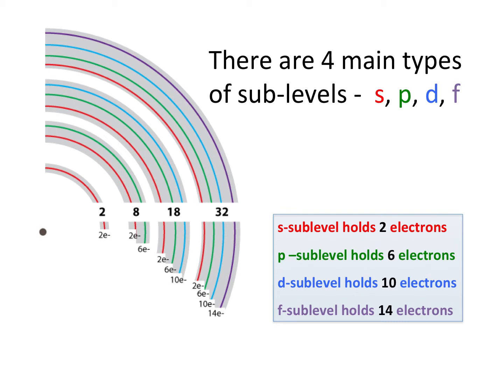That second row represents the second principal energy level. You can see it's broken into two parts: the S sublevel corresponds to lithium and beryllium, and the P sublevel is boron across to neon. If you count from boron, carbon, nitrogen, oxygen, fluorine, and neon — there are six elements. Each has an electron, representing the six electrons sitting in the P sublevel in the second principal energy level.